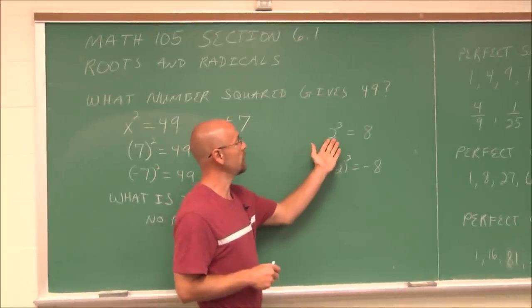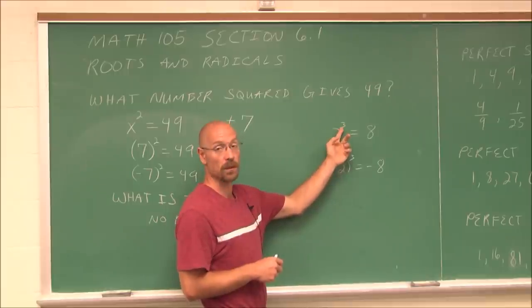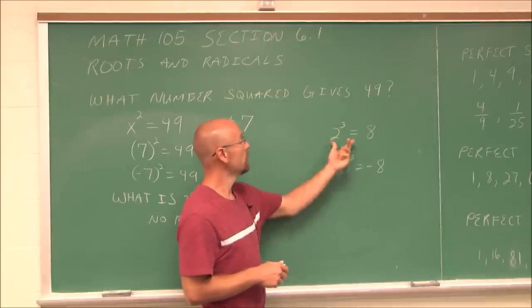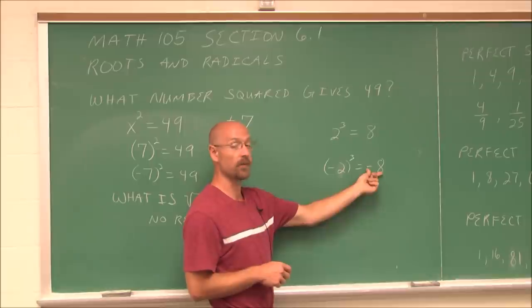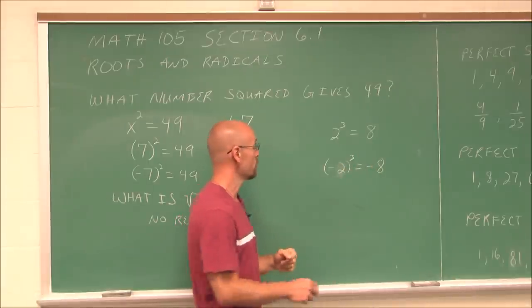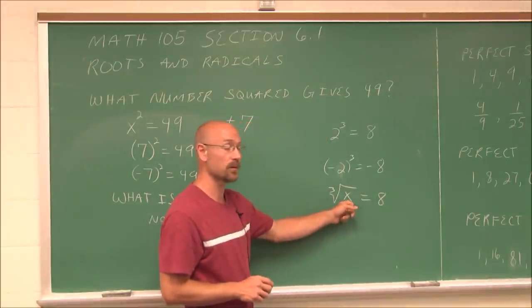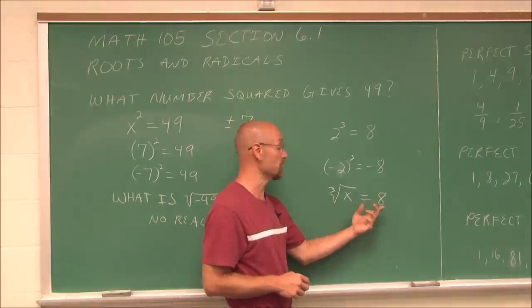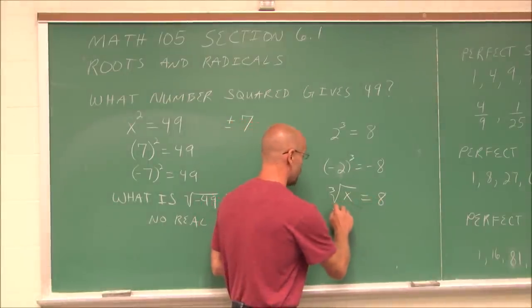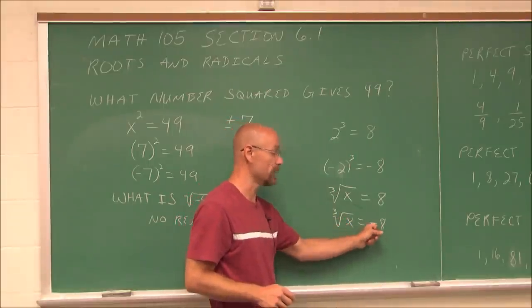What if we asked: what number cubed gives us 8? 2 cubed gives us 8. When it comes to cube roots, if the value is positive it gives a positive. But negative 2 cubed gives negative 8, because a negative times a negative times a negative is a negative value — an odd number of negatives. So if the cube root of x equals negative 8, that value must be negative.